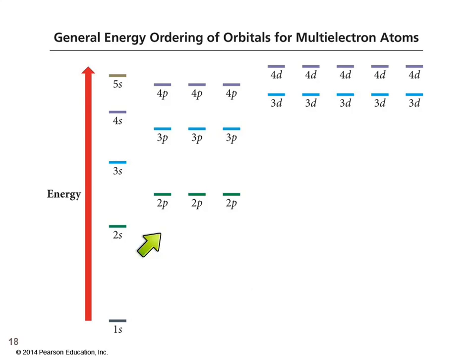But this is a very helpful table to look at when you're trying to do orbital diagrams or electron configurations. Because the order of filling is 1s, 2s, 2p, 3s, 3p, 4s, 3d, 4p, 5s, 4d. Just climbing up the ladder.